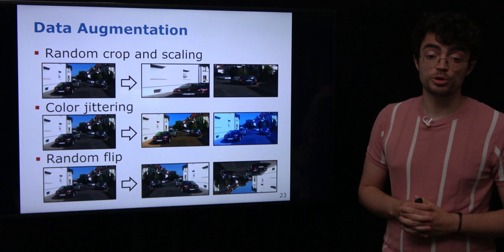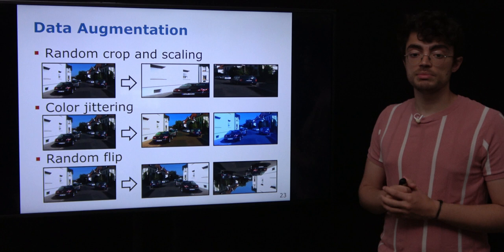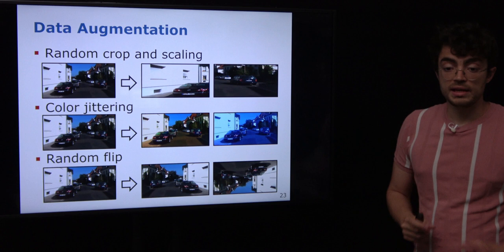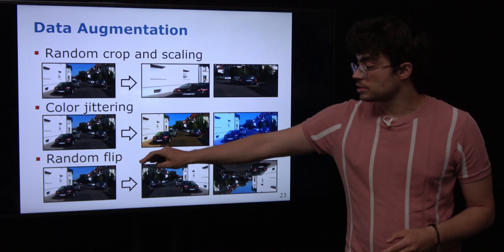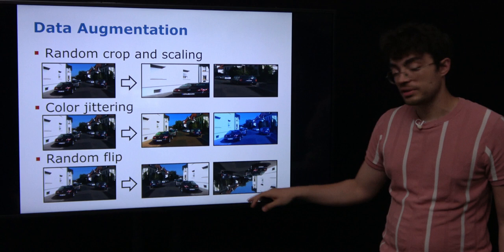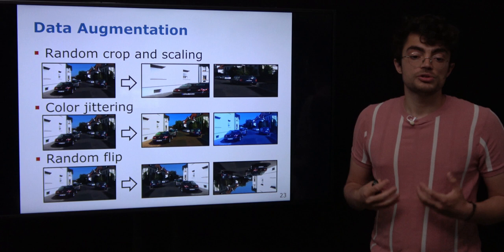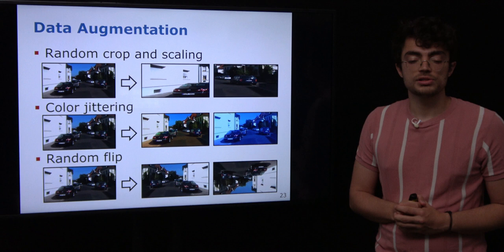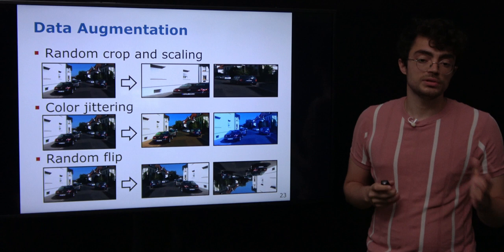Data augmentation plays an important role in contrastive learning. Examples of data augmentation over images include: random crop — where we crop the source image and rescale it back to the original size; color jittering — where we sample random noise and add it to each color channel in the RGB image; and random flip — where we randomly flip the image. By aggregating all these augmentations, we want to have quite different versions of the same source image to use with the contrastive loss to learn meaningful features without having any labels.